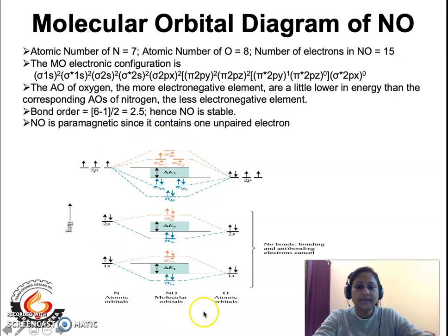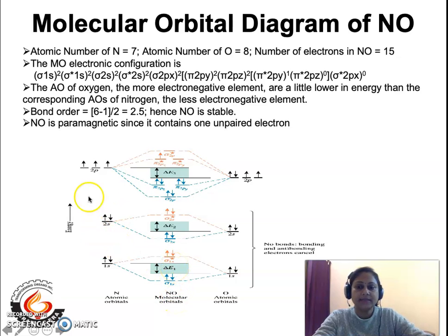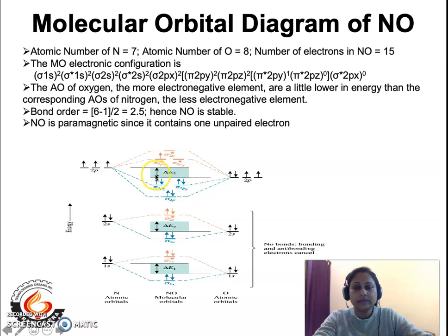Now let us see the filling. The 2 electrons in each 1s orbital occupy the bonding and anti-bonding molecular orbitals. Similarly, the 2 electrons in each 2s orbital fill both the bonding and anti-bonding molecular orbitals.